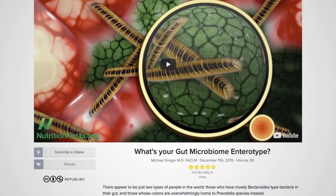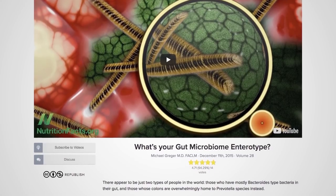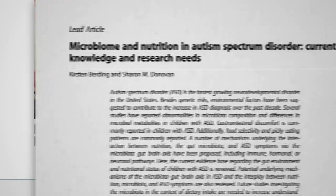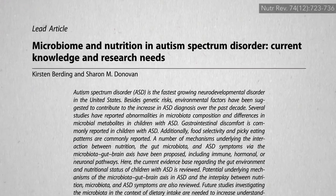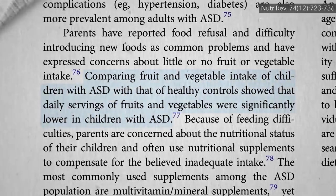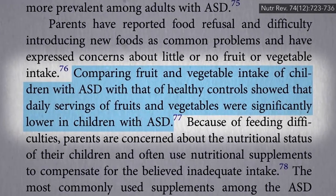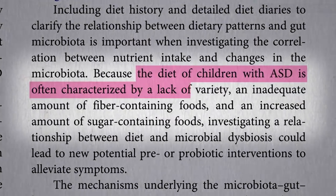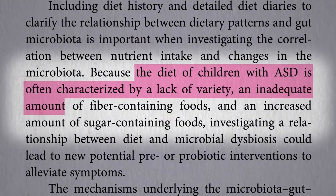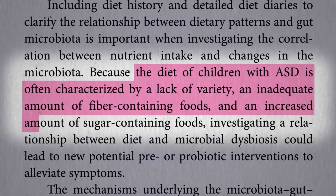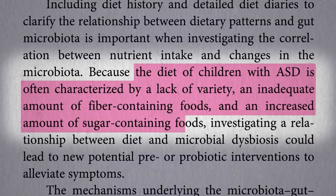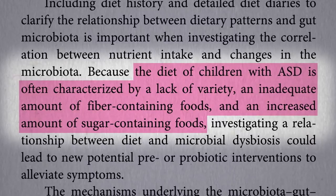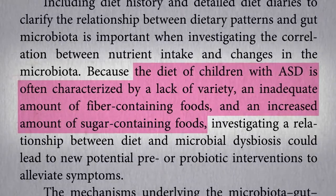But which came first? Instead of the bad gut flora leading to autism, isn't it more likely that the autism led to the bad gut flora? Children with autism eat diets with significantly fewer servings of fruits and vegetables, often characterized by a lack of variety, an inadequate amount of fiber-containing foods — meaning whole plant foods in general — and an increased amount of added sugar. So couldn't that explain the different gut flora right there?